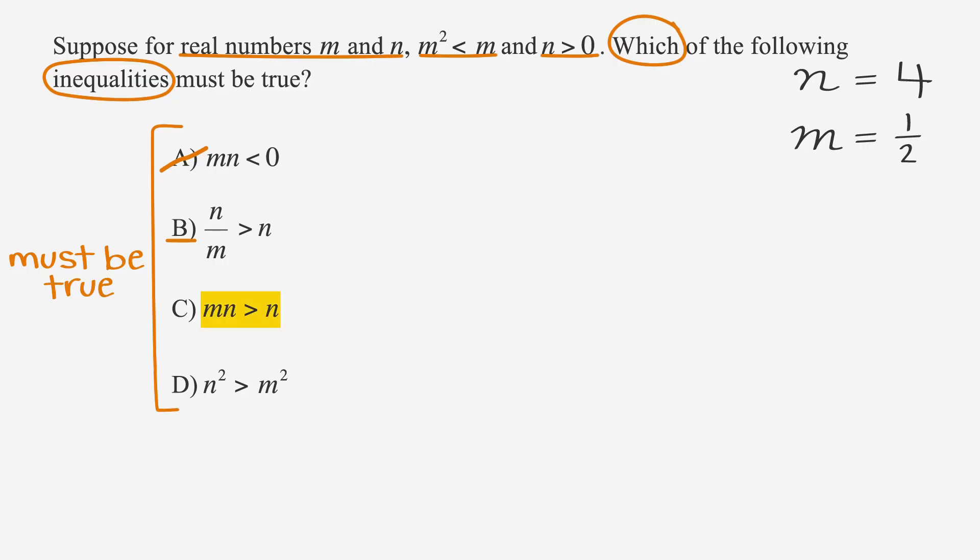Next, we can test answer choice C. m times n is greater than n. We already found that m times n, or one half times four, is two, which is smaller than four, our number for n. Answer choice C is not true. Let's cross it off and move on.